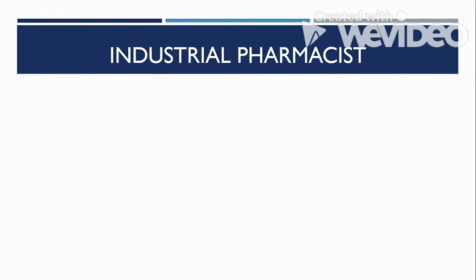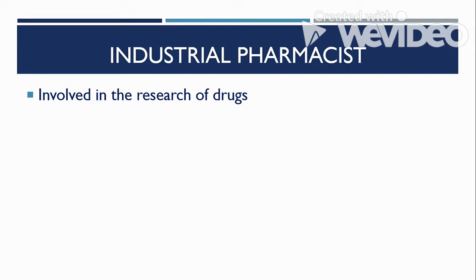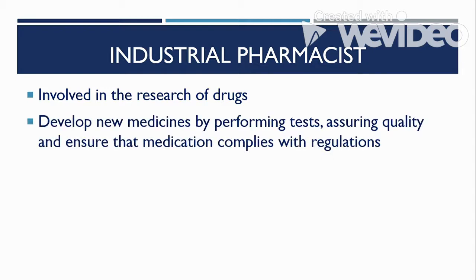Next are industrial pharmacists. They do research to learn more about the uses of drugs, conduct clinical drug trials, and evaluate the results to determine a drug's effectiveness as well as its potential risks or side effects. They also develop new medicines by performing tests, assuring quality, and ensuring that medication complies with regulations. They use the latest methods, technologies, and processes to develop new medications, testing them for efficiency and safety to ensure the drug passes the standard specifications set by the Food and Drug Administration.